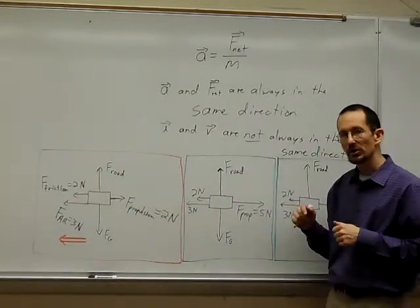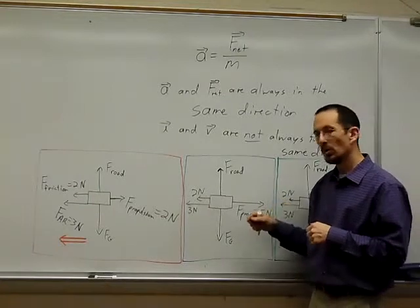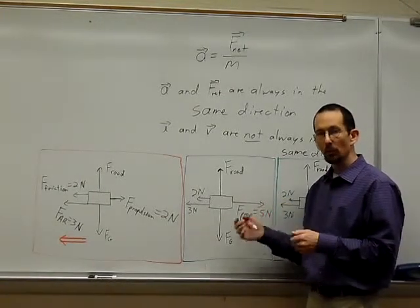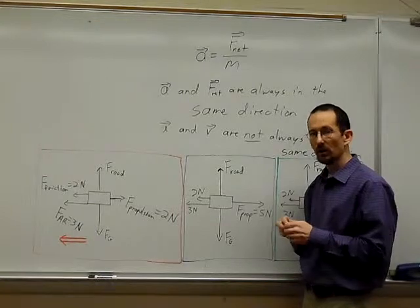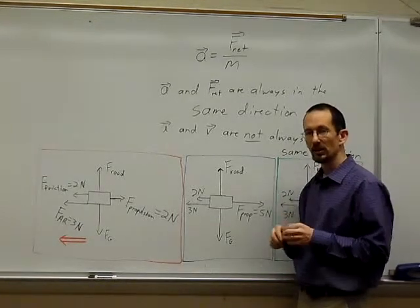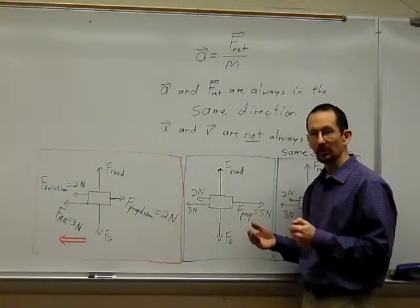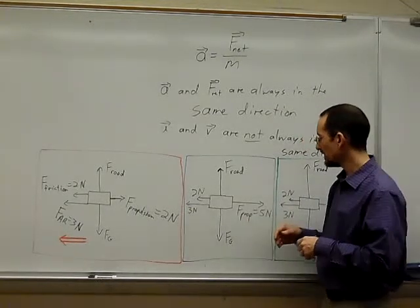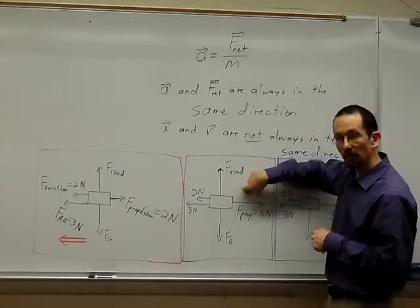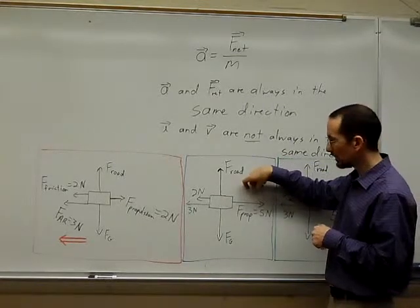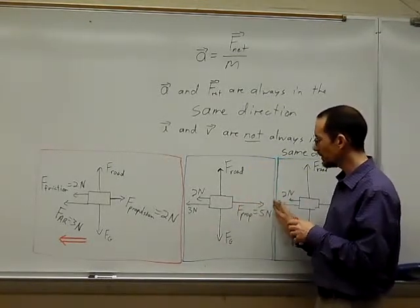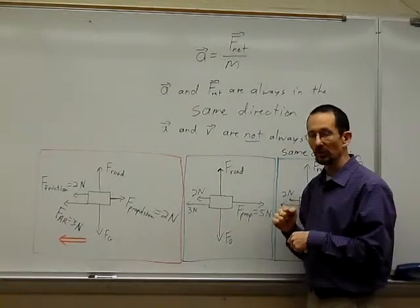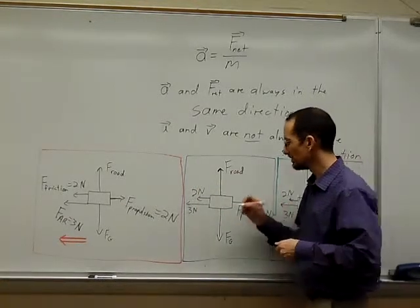Now if we wanted this car to move at a constant velocity, we would need the net force to be zero. We know that from Newton's first law or from the second law. The first law says for an object to have a constant velocity, that only happens when the net force is zero. So we need our force of propulsion to be five newtons, assuming everything else stays the same. Five newtons to the right, five newtons to the left gives a net force of zero.